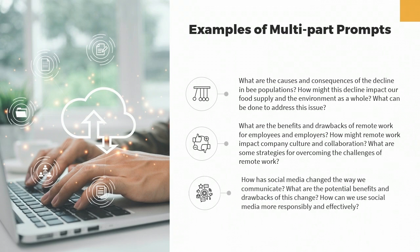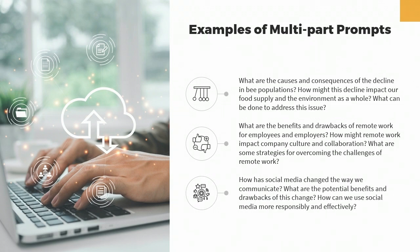Prompt Example 3: How has social media changed the way we communicate? What are the potential benefits and drawbacks of this change? How can we use social media more responsibly and effectively? This prompt consists of multiple questions that address different aspects of social media's impact on communication, and encourages us to consider both the positives and negatives of this ubiquitous technology.